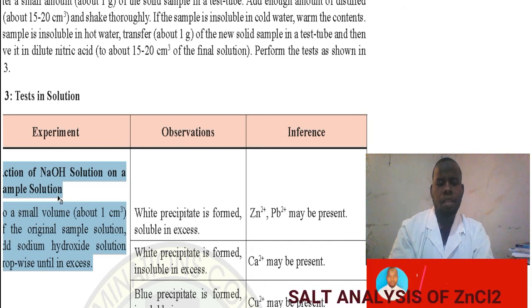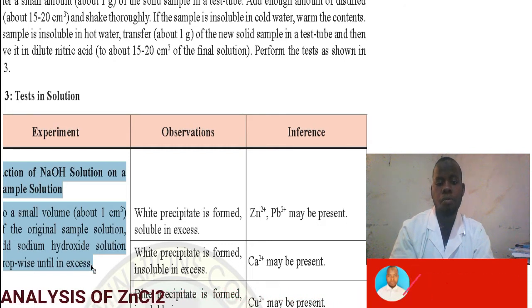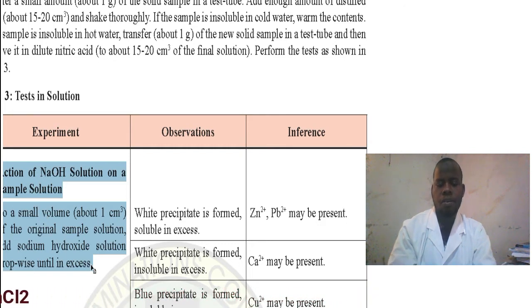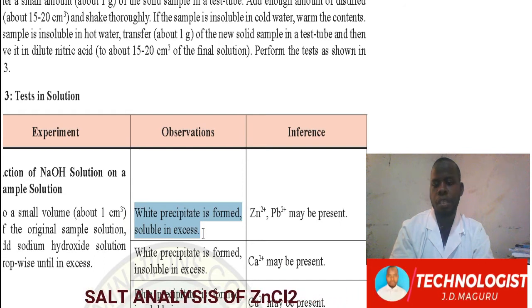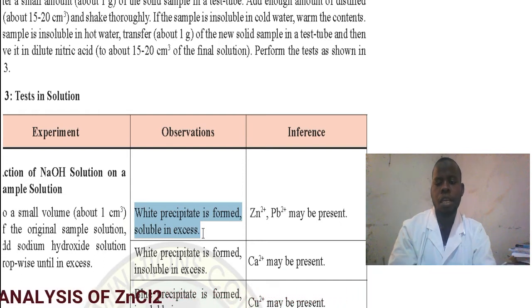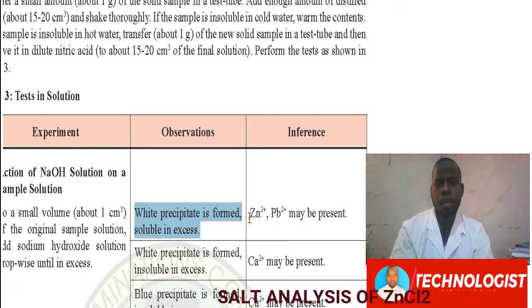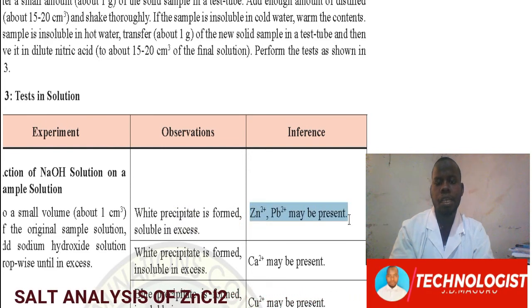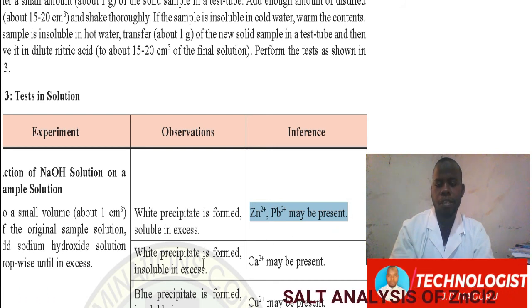In testing solution, we start with the action of sodium hydroxide. Transfer a small volume of sample solution of zinc chloride and add sodium hydroxide. The observation is that a white precipitate is formed, soluble in excess sodium hydroxide solution. The inference is that zinc and lead may be present.